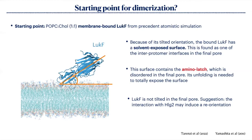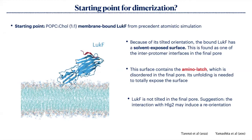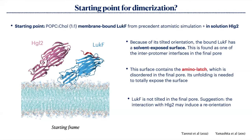Moreover, this surface also contains the amino latch I mentioned, which is disordered in the final pore. Its unfolding is supposed to be needed to totally expose the interface. I placed the second monomer close to this exposed interface surface. And because LukF is not tilted in the final pore, the interaction with HlgB should probably induce a reorientation.